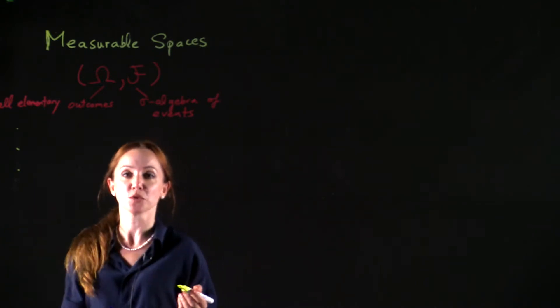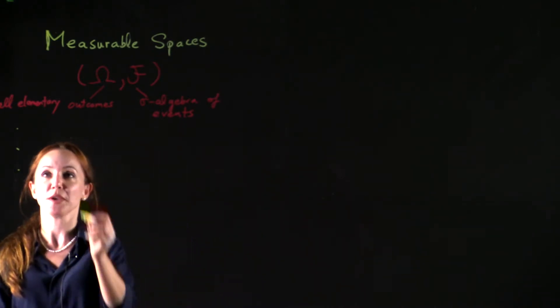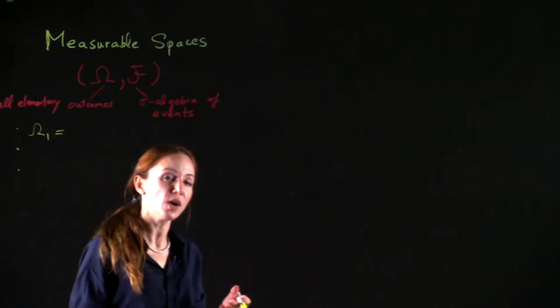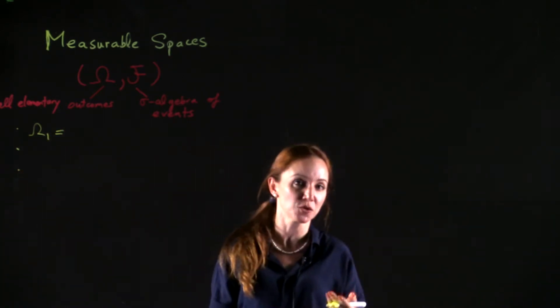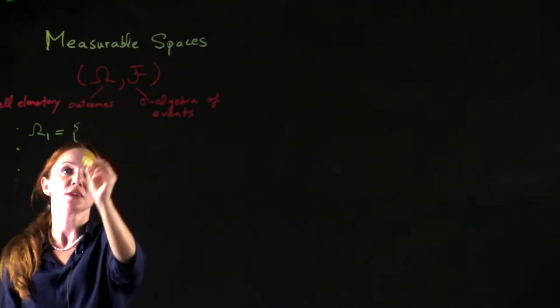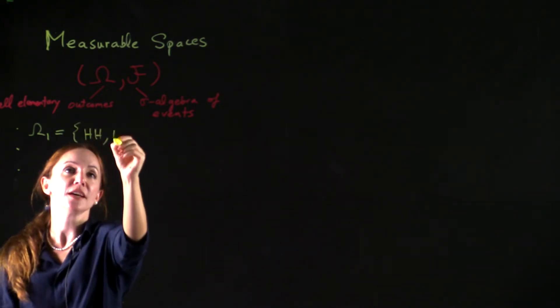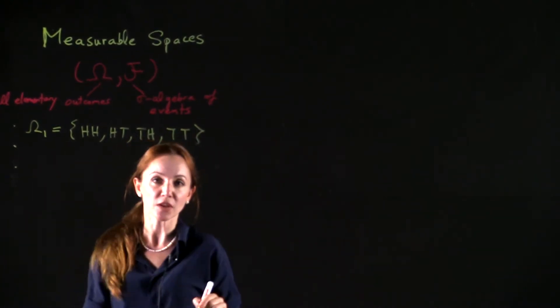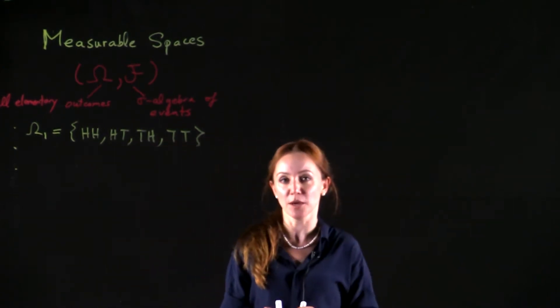Let's give some examples for the sample space omega. For example, consider the experiment of tossing a coin twice. In each toss, we get heads or tails. In that case, all possible outcomes are heads heads, heads tails, tails heads, and tails tails. This is a finite sample space.